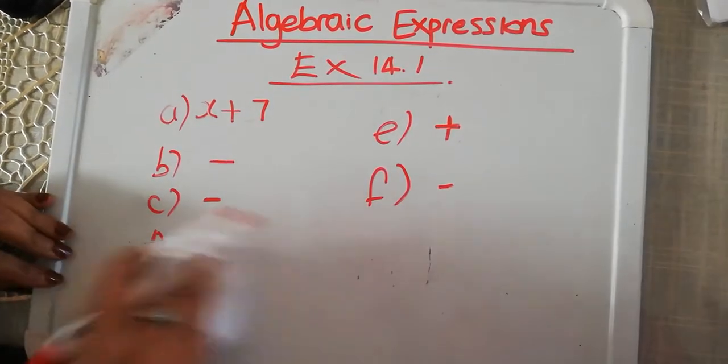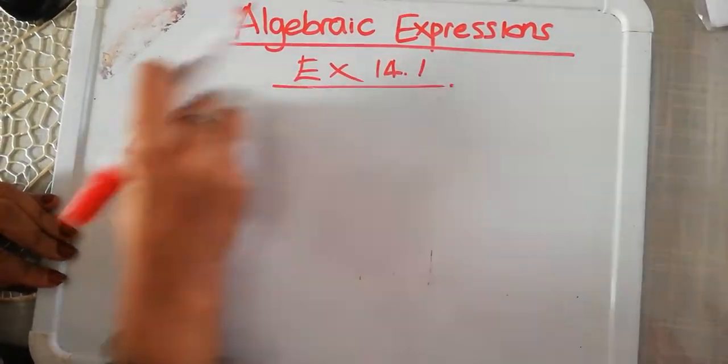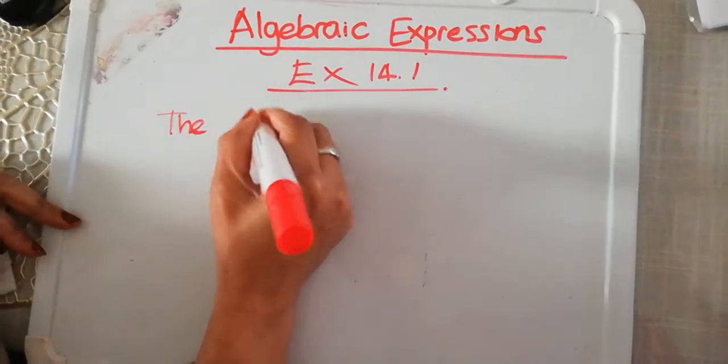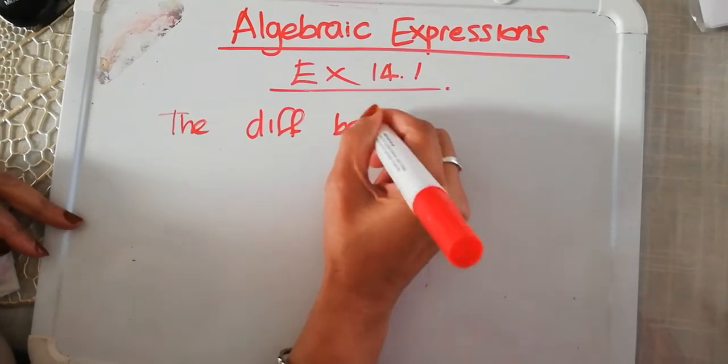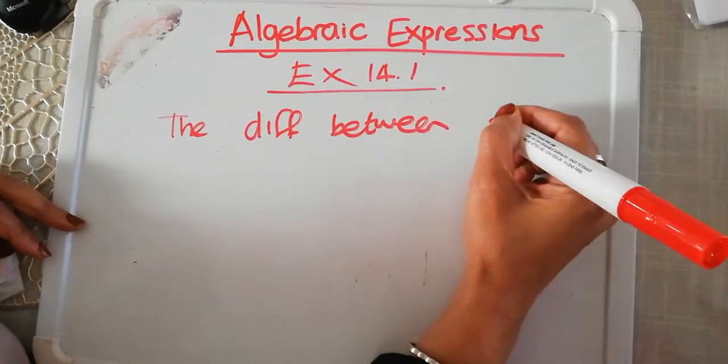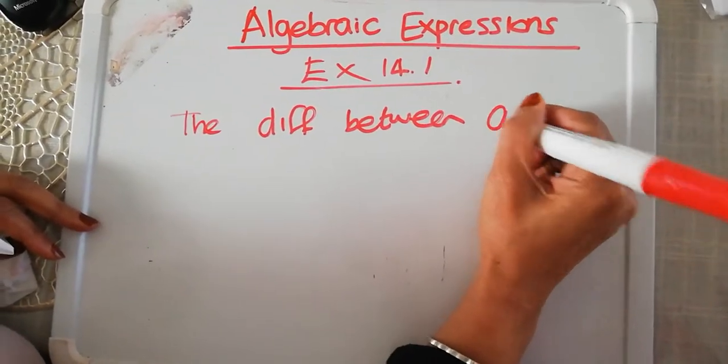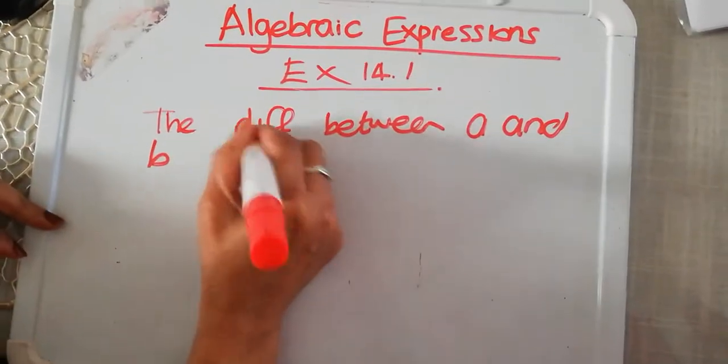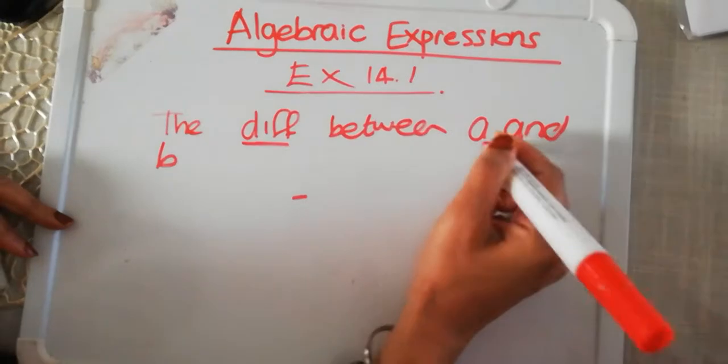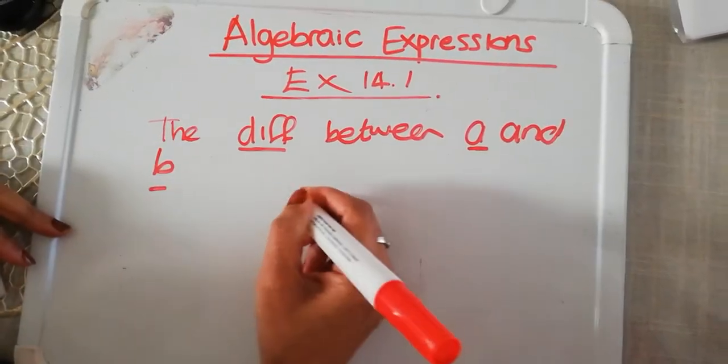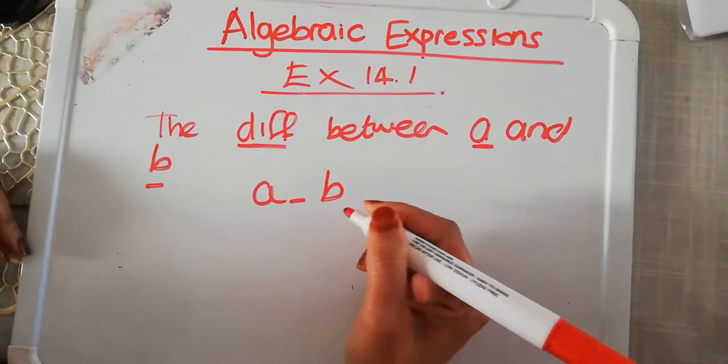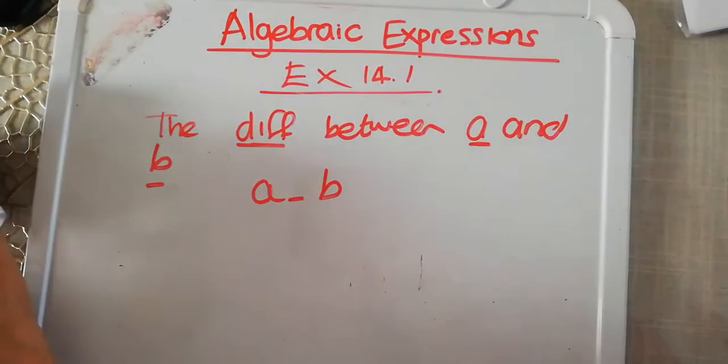I've done the PowerPoint to explain to you how it works. Maybe I can just do a few more examples different from your exercise to help you understand. So if they said the difference between A and B, the word difference tells me it's a minus. They're giving me two variables, A and B. So it means A minus B.